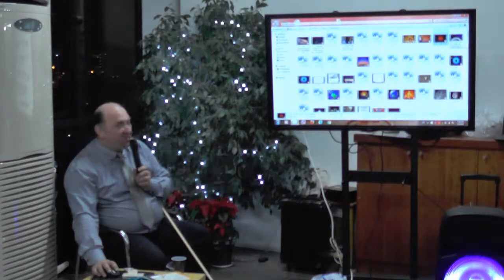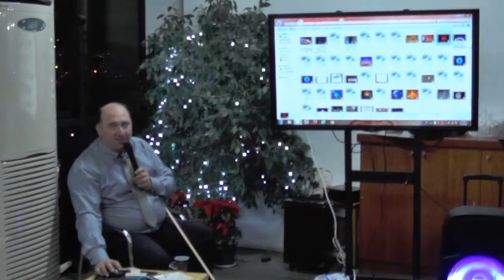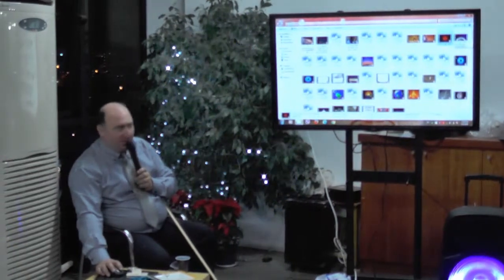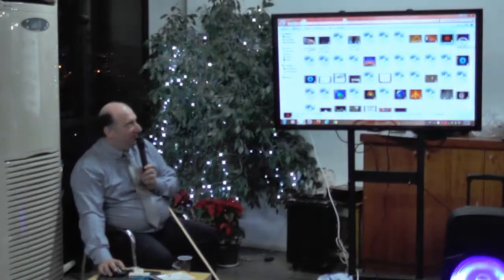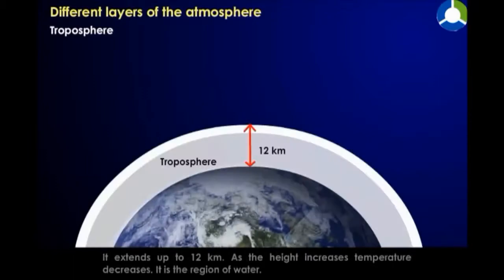We will see the structure of the layers of the atmosphere now. Different layers of the atmosphere. Troposphere — it extends up to 12 km.